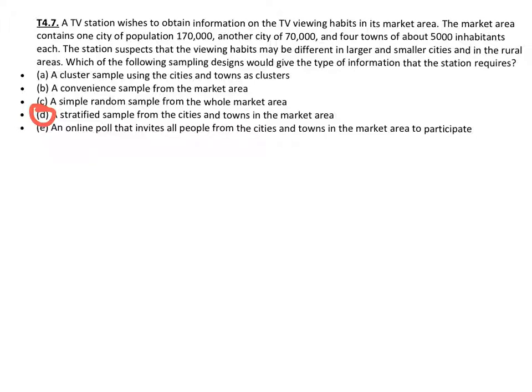The best answer here is going to be letter D. Now one thing they're not doing is imposing a treatment. This is an observational study. So it could be a cluster, convenient sample, random sample, stratified, or an online poll. A stratified sample from cities and towns in the market area is going to be your best bet because they are different types of groups. This could be one strata, another strata, and then our other strata would be the towns of 5,000. You would then put them in different groups based on their town or city size.